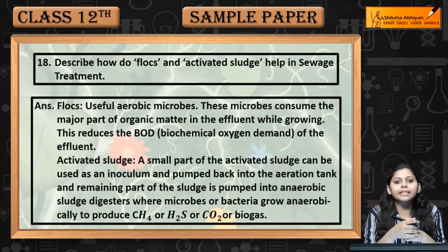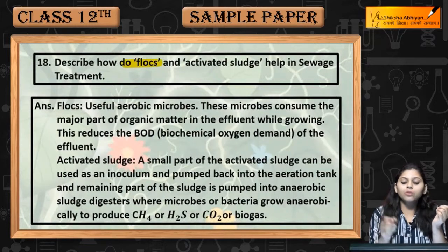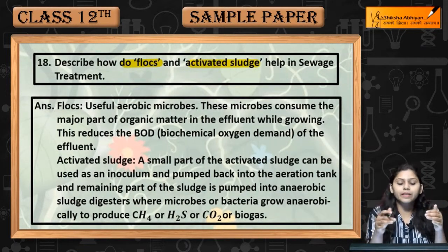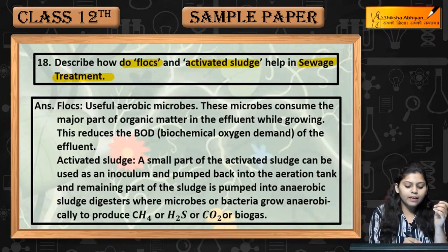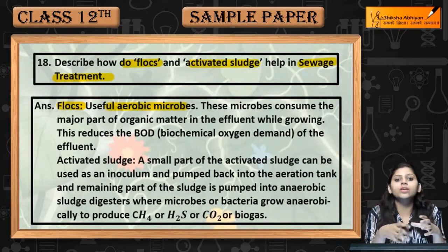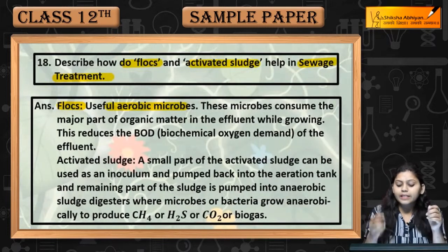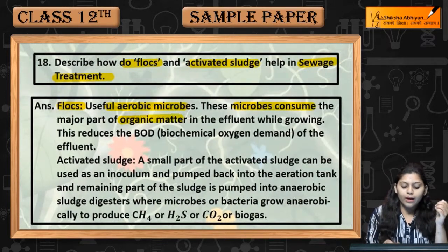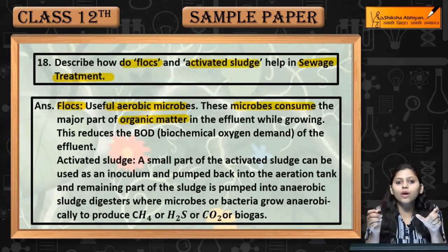Question number 18: describe how flocks and activated sludge help in sewage treatment. Flocks are useful aerobic microbes. Aerobic microbes are those that require oxygen. These microbes consume the major part of the organic matter present in the effluent.